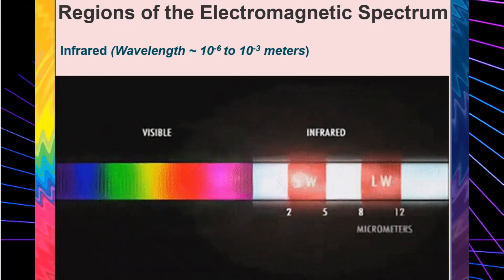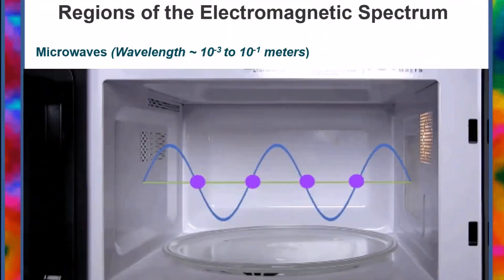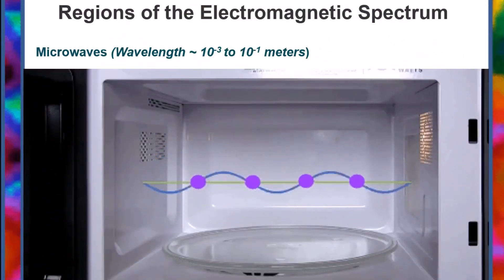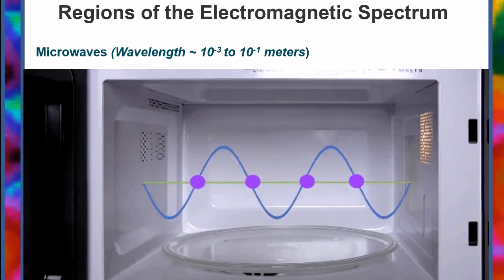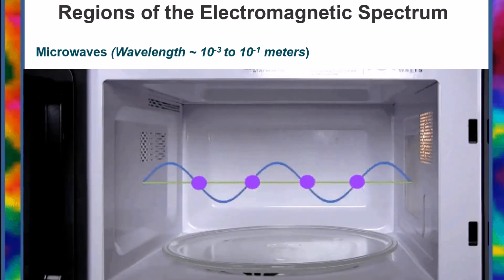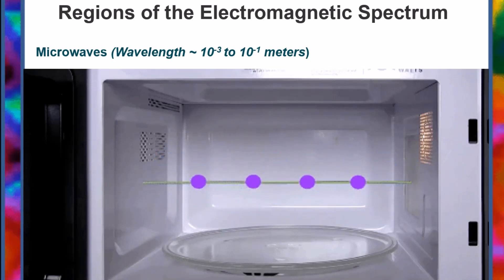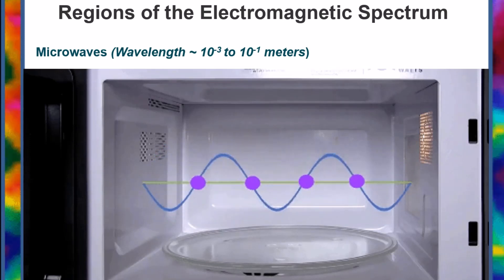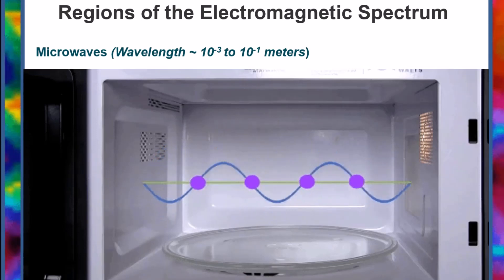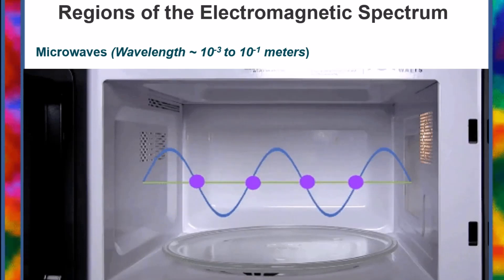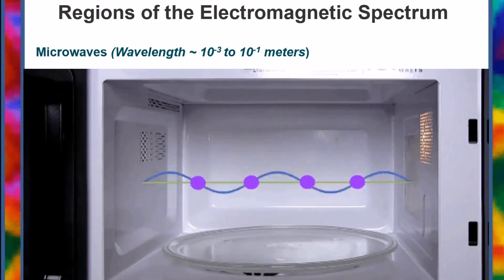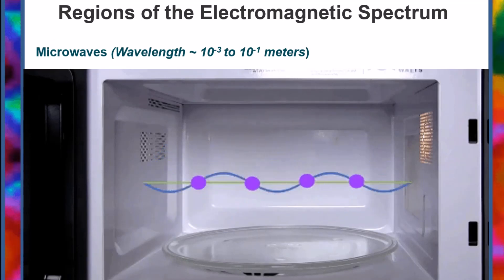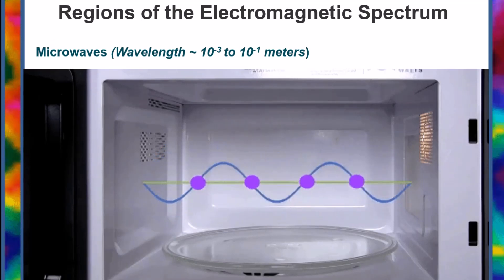Microwaves, wavelength approximately 10 to the power of negative 3 to 10 to the power of negative 1 meters. Microwaves are essentially high-frequency radio waves and have wavelengths that range from 1 millimeter to 1 meter. Different wavelengths or bands of microwaves are used for different applications. Mid-wavelength microwaves can penetrate haze, light rain, and snow, clouds, and smoke, and are beneficial for satellite communication and studying the Earth from space. Radar technology sends pulses of microwave energy and senses the energy reflected back.